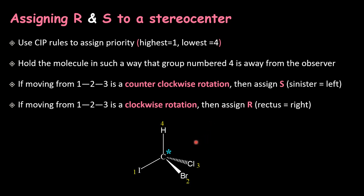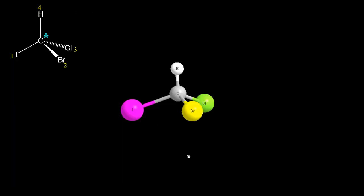Let us do it with this molecule — iodobromochloromethane. Because of the higher atomic number, iodine takes up priority 1, then bromine, then chlorine, then the least one is hydrogen. In the same molecule shown in 3D: iodine is priority number 1, bromine 2, chlorine 3, and hydrogen 4.